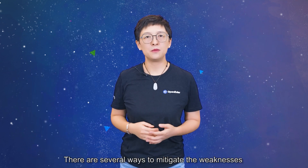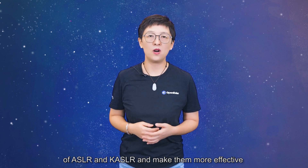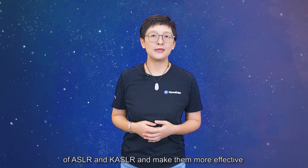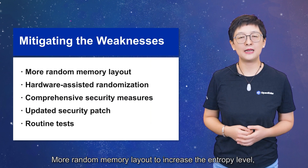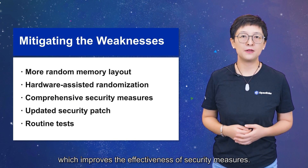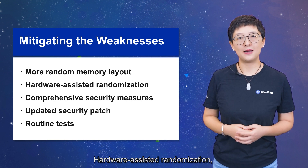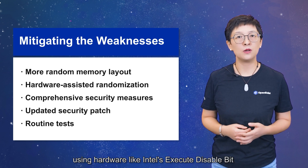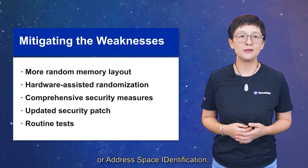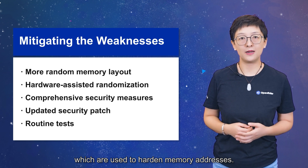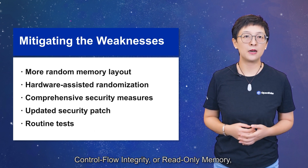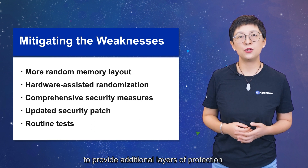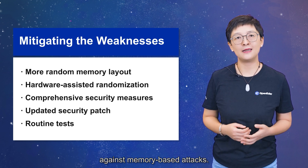There are several ways to mitigate the weaknesses of ASLR and KASLR and make them more effective against memory-based attacks. These include: more random memory layouts to increase the entropy level, which improves the effectiveness of security measures; hardware-assisted randomization using hardware like Intel Execute Disable Bit or address-based identification to harden memory addresses; and comprehensive security measures using binary hardening, control flow integrity, or read-only memory to provide additional layers of protection against memory-based attacks.